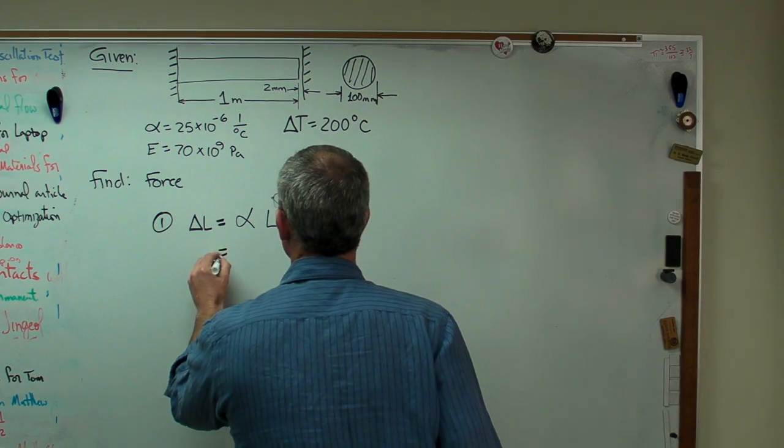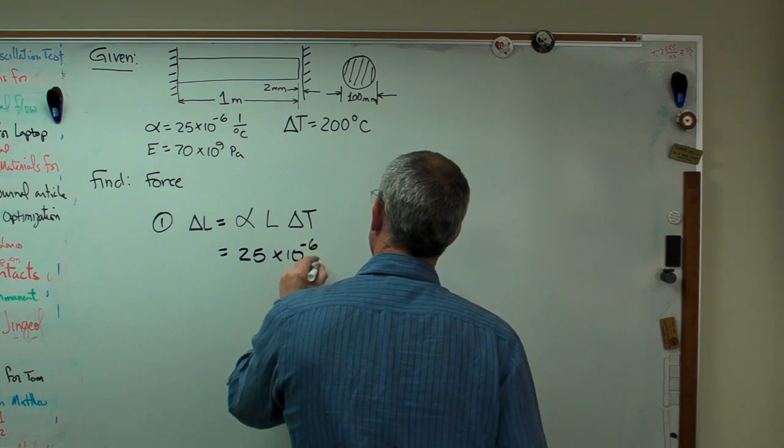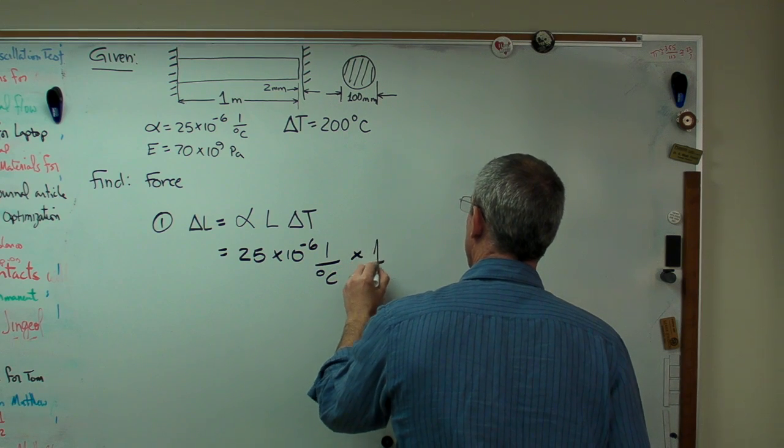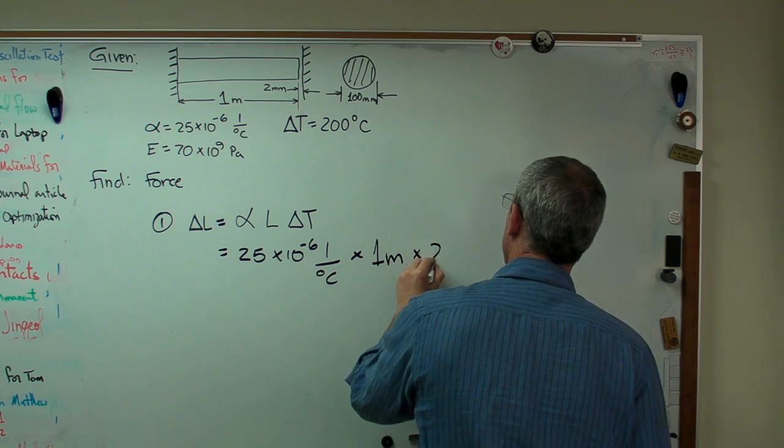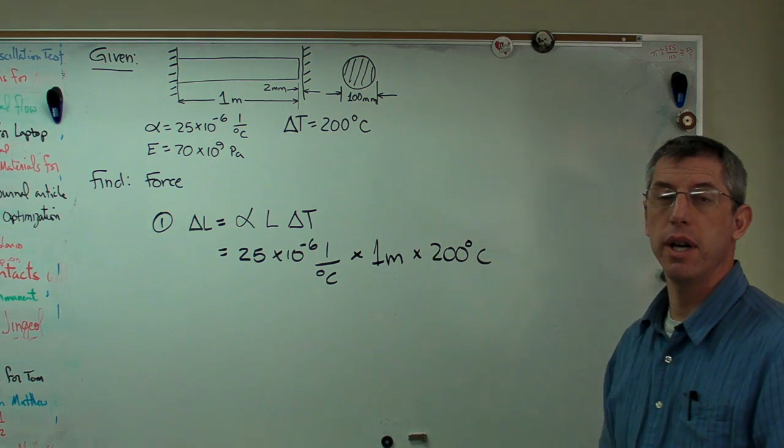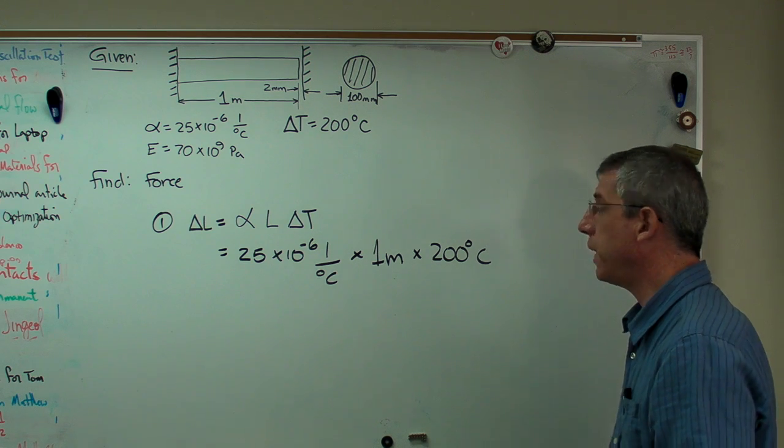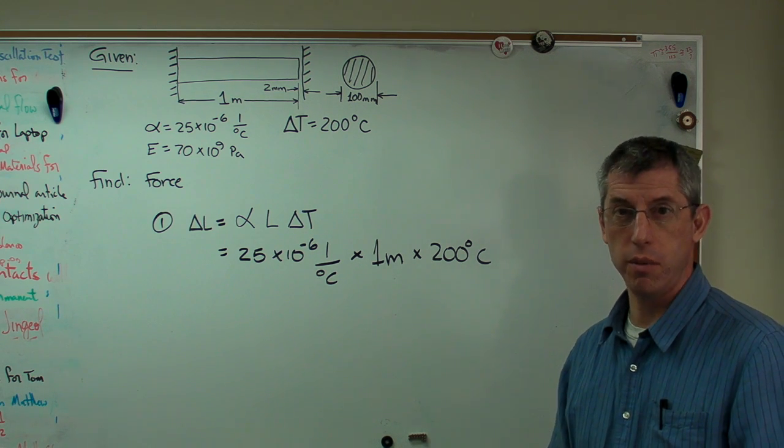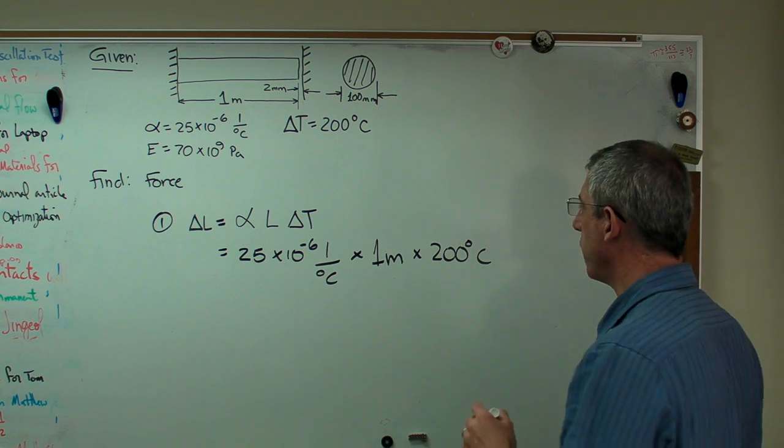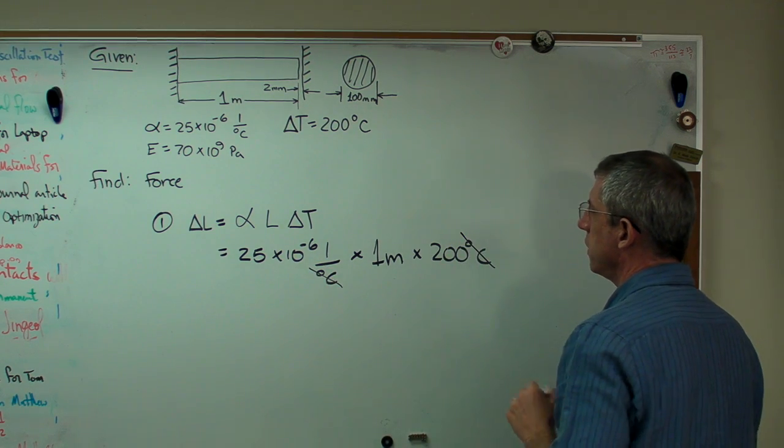If you plug the numbers in here, 25 times 10 to the minus 6 per degree C times 1 meter times 200 degree C. Now, I'm being very careful to carry my units through the problem. Always do that, because if the units work out, chances are the numbers will work out. If the units are correct, the numbers will pretty much come along for the ride.